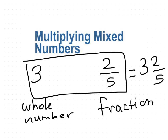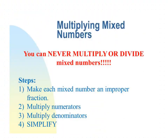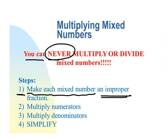So what is a mixed number? Mixed means you mix both of them — so 3 and 2/5 is a mixed number. Today we are going to learn how to multiply mixed numbers. You can never directly multiply or divide mixed numbers — we have to modify them first. We have to do something before we can multiply or divide.